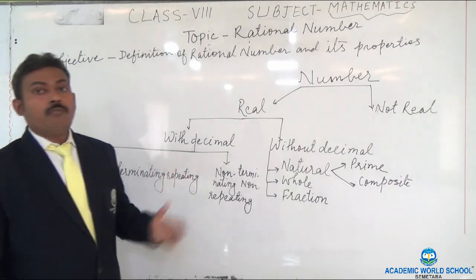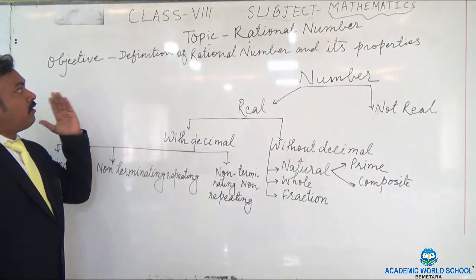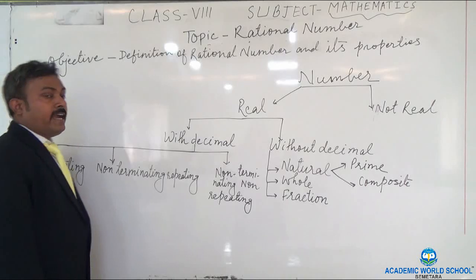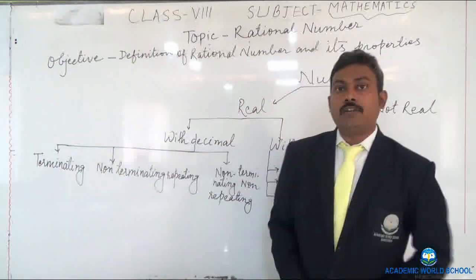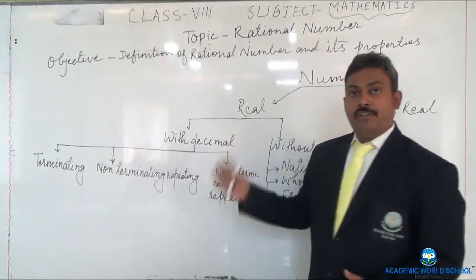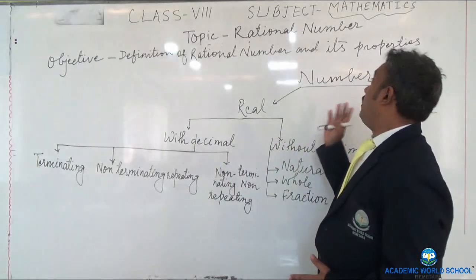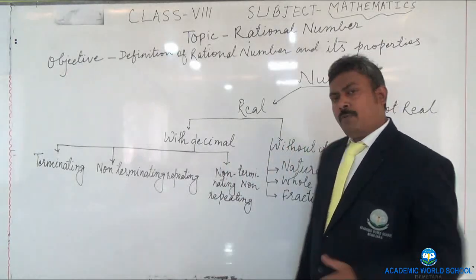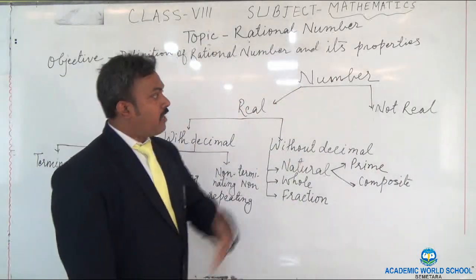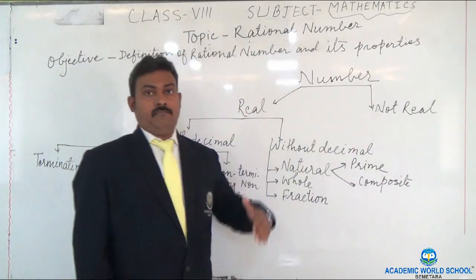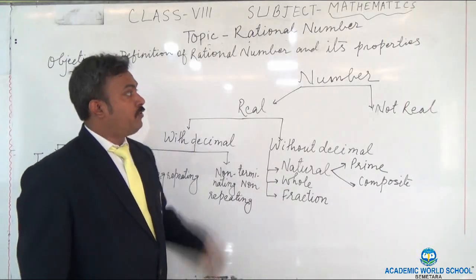In rational numbers, what we are going to study is the definition of rational numbers and its properties. So two things we are going to focus on: one is the definition of rational number, and the other one is its properties. Before we start with rational numbers, I would like to go through some of the important terms which we will come across.